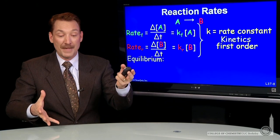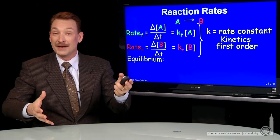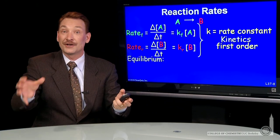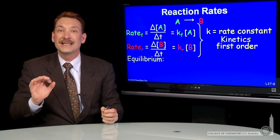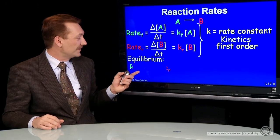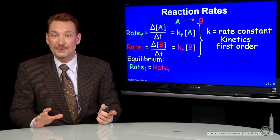So at equilibrium, the macroscopic concentrations of A and B don't change, but they interconvert. They just interconvert at equal rates. So let's set the forward and reverse rate constants equal.